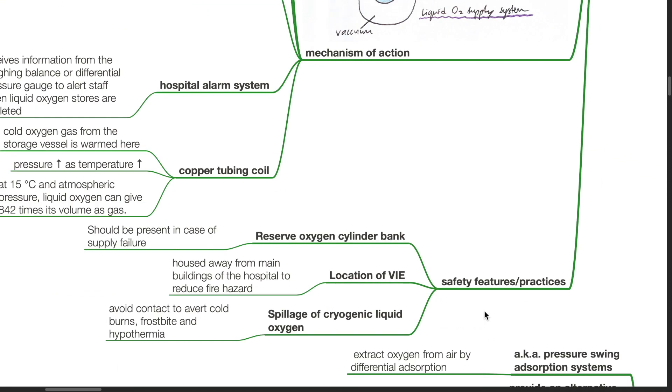Safety features and practices: Reserve oxygen cylinder bank should be present in case of supply failure. VIE should be housed away from the main buildings of the hospital to reduce fire hazard. Avoid contact with spillage of cryogenic liquid oxygen to avert cold burns, frostbite, and hypothermia.